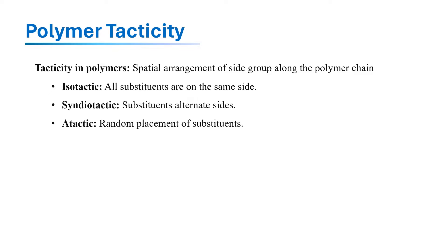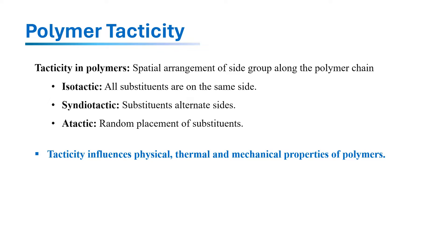Tacticity is simply how the side groups are arranged in relation to each other in the polymer chain backbone. Isotactic, syndiotactic and atactic polymers are stereoisomers and their physical, thermal and mechanical properties vary significantly due to different spatial arrangement of side groups along the polymer chain. In this video I am going to discuss a comparison in properties of isotactic, syndiotactic and atactic polymers.